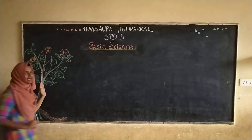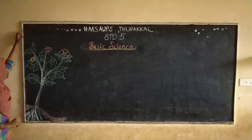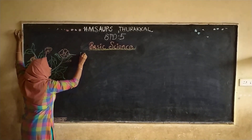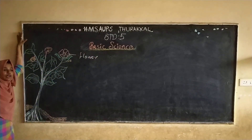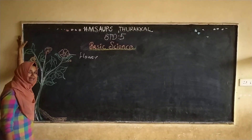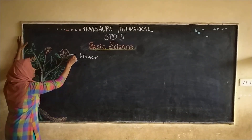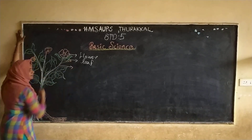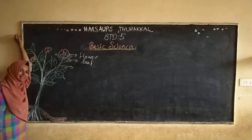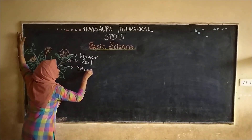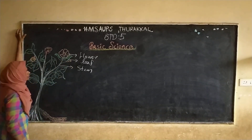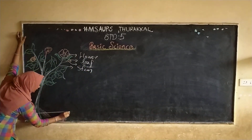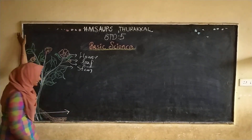Here I am drawing a simple plant. What is this part? It is the flower — one of the most beautiful parts of a plant. Then there is a green colored leaf. Here is a very important part of the plant — that is the stem. And the ultimate base of the plant is the roots.